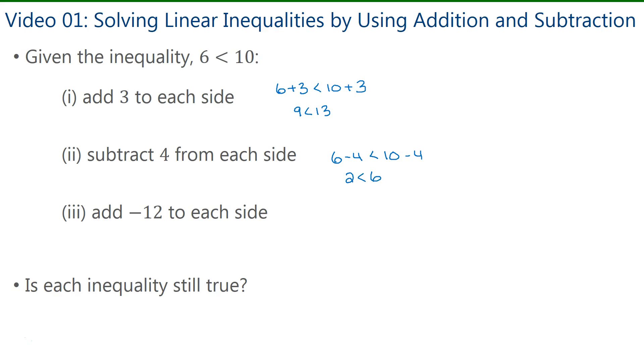And for the third part, we have to add negative 12 to both sides. Now simplifying that, I get negative 6 is less than negative 2.